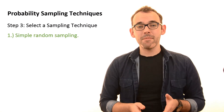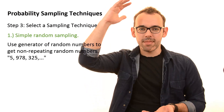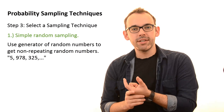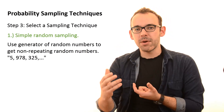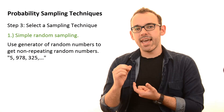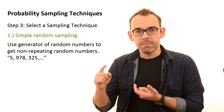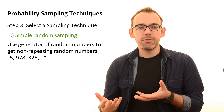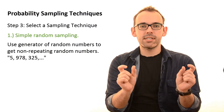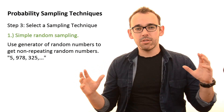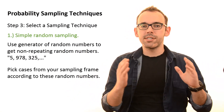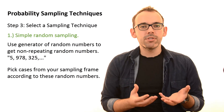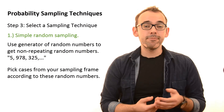First, we have simple random sampling. So let's say we have our list of 1,000 names. We will go to a generator of random numbers, and since our sample size should be 278, we will task this generator to produce 278 random numbers that are not repeating and are within the range between 1 and 1,000. Our result might look like: first number is 5, second number is 978, and so on. We will then go to our sampling frame and select cases according to these random numbers, giving us a random selection of cases. Simple random sampling is really simple.